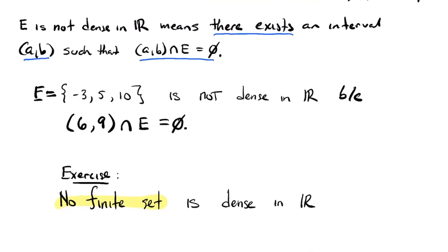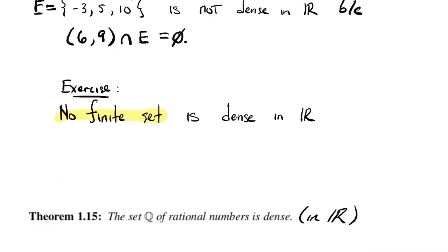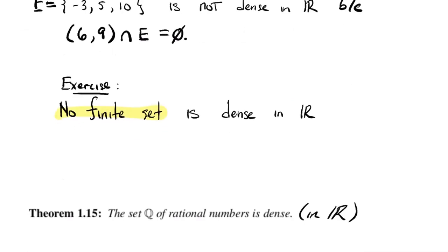So we have this definition of density. Roughly speaking, a set is dense in ℝ if its elements are everywhere — in the sense that any open interval of any length cannot avoid the set E. The main theorem of this lecture is that the set of rational numbers ℚ is dense in ℝ. This makes precise the statement I opened with, that the rational numbers are everywhere.